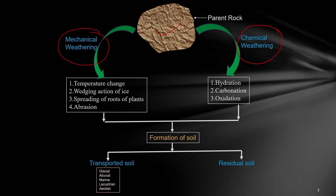Once the soil is broken into small pieces in the weathering process, it will be transported or may remain in place. If not transported, it will be known as residual soil; if transported, it will be known as transported soil. Depending on how it is deposited, the soil can be glacial soil, alluvial soil, marine soil, lacustrine soil, or aeolian soil.